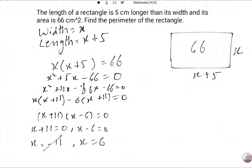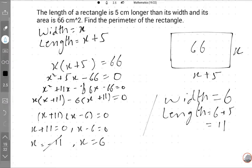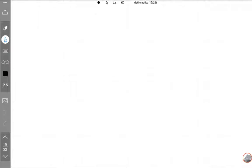What is the perimeter? Perimeter equals 2L + 2W.